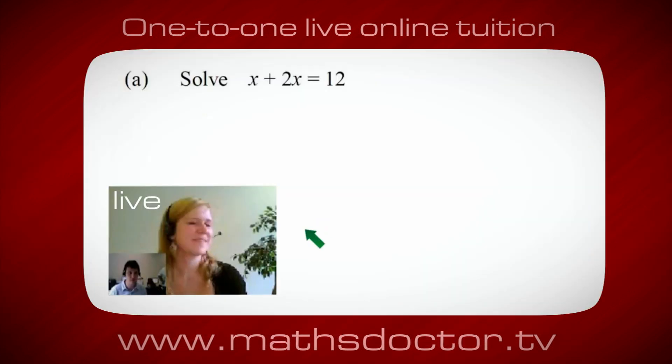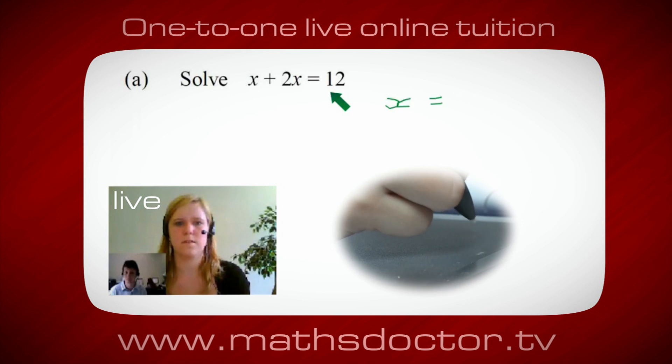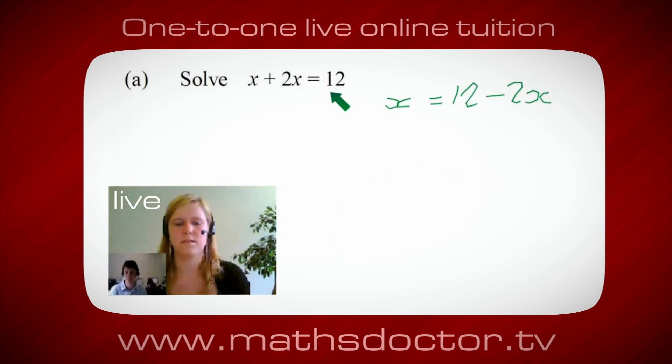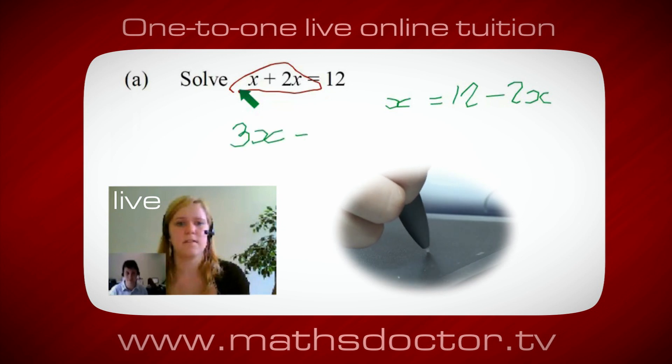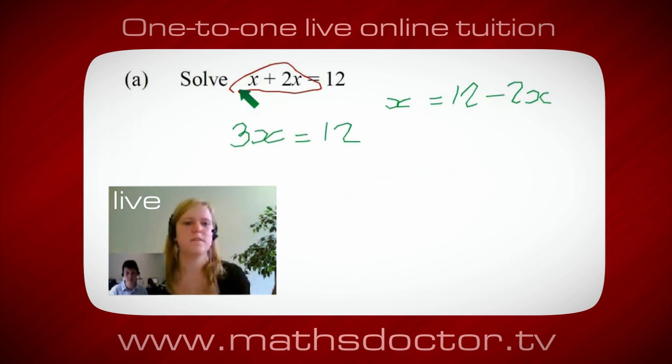OK, Marie, so let's have a look at this one. So solve x plus 2x equals 12. So what do you think you do first? OK, well, I want x on its own. So I would put x equals 12 minus 2x. OK, so a lot of the time we want to get x by itself, but what we want to do first is get all of these x's together. So can you see anything we can do with this? Get all these together in one place. Oh, OK, it's 3x, isn't it? Yeah, absolutely. So 3x equals 12. Oh, and so x equals 4. Brilliant. Spot on. Well done.